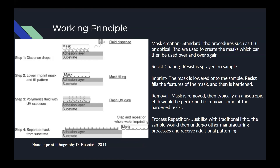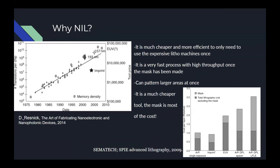Let's discuss the advantages of nanoimprint lithography to motivate our investigation. The key is absolutely in its price. Looking at the chart in the bottom left, compare nanoimprint with extreme ultraviolet — the most cutting-edge process used in industry. The most expensive part of nanoimprint is the mask, and the overall operating costs are far lower. The other chart also shows that the machine itself is far less expensive for nanoimprint.